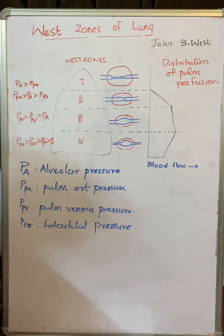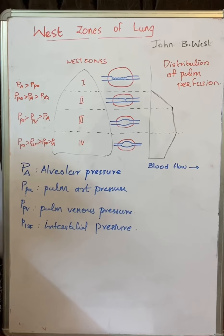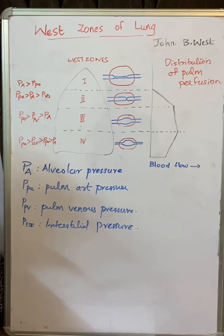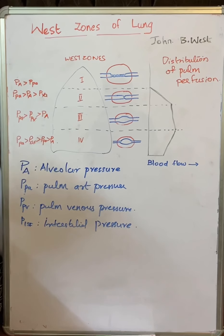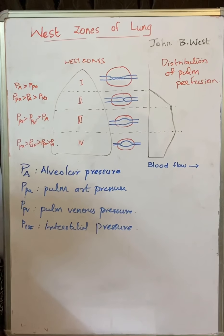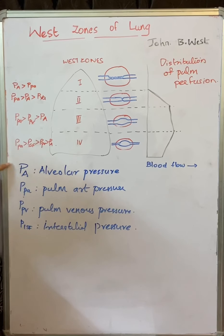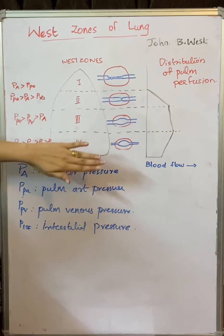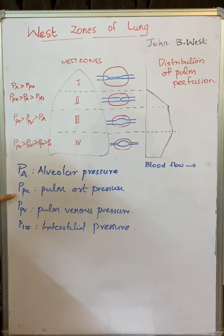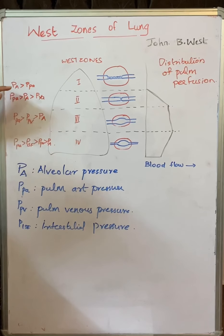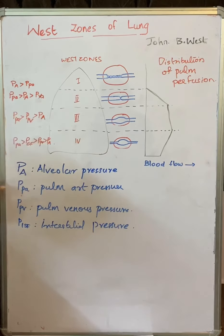Blood is pumped from the right ventricle into the pulmonary artery, and this kinetic energy is reflected in the velocity of blood in the pulmonary arteries. As blood ascends up the pulmonary artery, at the level of the heart, pulmonary artery pressure becomes zero. Above this level, pulmonary artery pressure becomes negative, decreasing proportionately for every 1 cm rise. Below the level of the heart, pulmonary arterial pressure increases. The alveolar pressure (PA) is almost fixed throughout all areas of the lung.